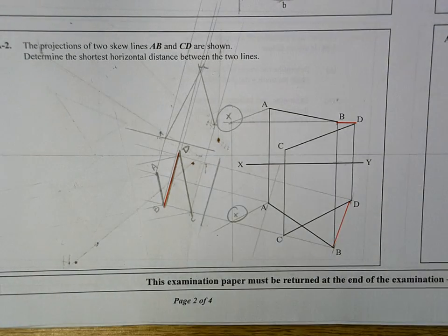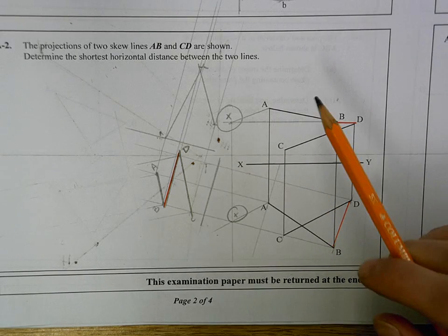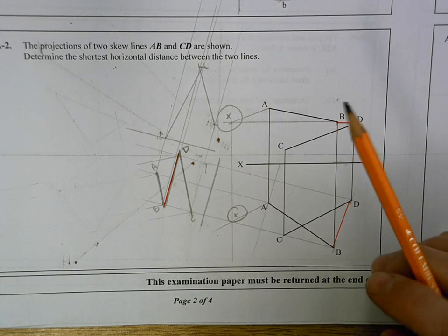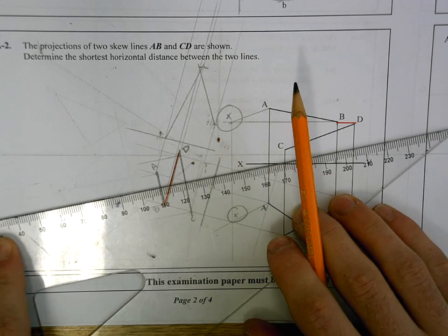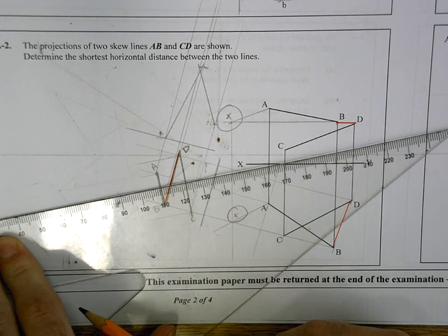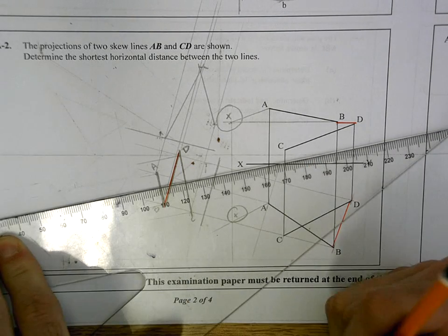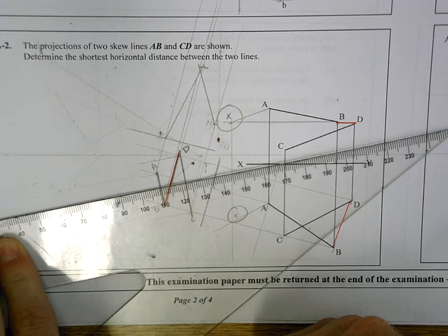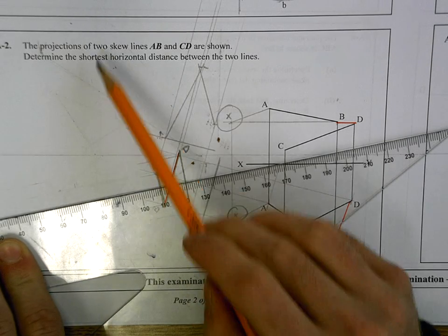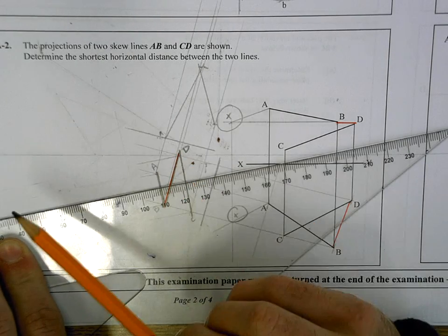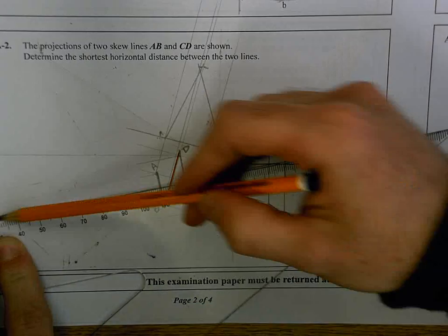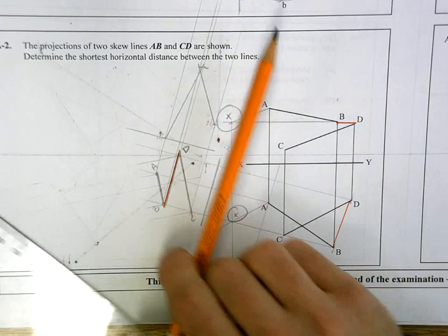Yesterday, when we were asked to get the shortest distance between them, we would have come out perpendicular to those two and created a second auxiliary, because the perpendicular distance is the shortest. This time, they're asking for the shortest horizontal distance. So rather than looking perpendicular, we have to look horizontally.